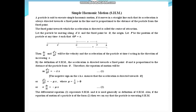The fixed point towards which the acceleration is directed is called the center of attraction. Let us suppose that the particle is moving along A' A and the fixed point is O. Let P be the position of the particle at any time t, such that the distance OP is x.